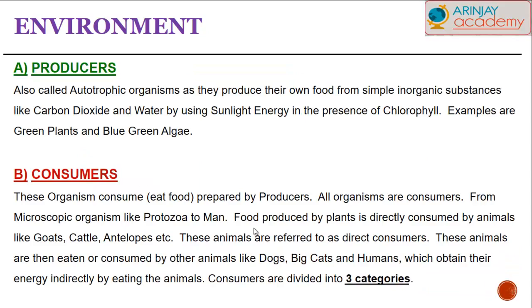Have a look at producers — autotrophic organisms. Basically, organisms that produce their own food from simple inorganic substances like carbon dioxide and water by using sunlight energy in the presence of chlorophyll. We are referring to green plants, and if they are water-based, blue-green algae.